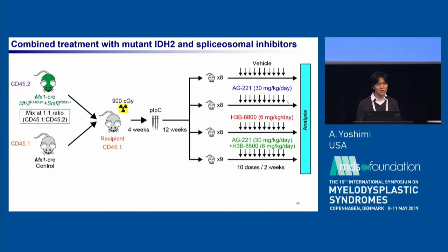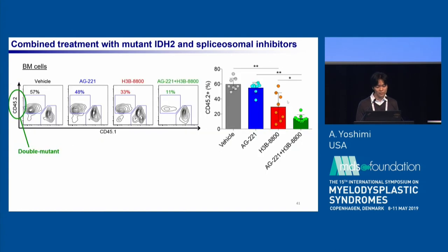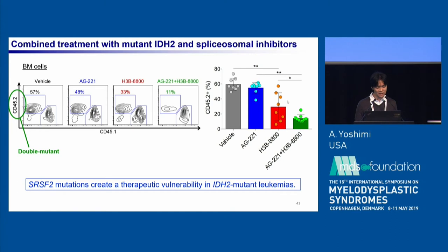I note that the name of this session is 'New Drugs and Combinations,' so I added this slide. To test the efficacy of combination therapy of IDH2 inhibitor and spliceosome inhibitor, we mixed CD45.2 double mutant cells with wild-type controls at a one-to-one ratio and transplanted into recipient mice. After engraftment, we treated these mice with Enasidenib (IDH2 inhibitor), spliceosome inhibitor, and the combination therapy for two weeks. The representative FACS plots and quantification revealed that the combination therapy preferentially killed the double mutant cells, suggesting that SRSF2 mutation creates therapeutic vulnerability in IDH2 mutant leukemias.